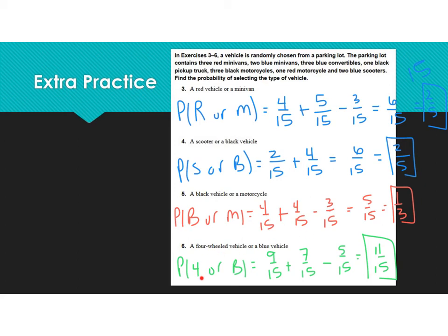For number 6, the probability of a vehicle with 4 wheels or a blue vehicle: I counted 9 vehicles with 4 wheels out of 15, and 7 vehicles are blue. I subtract the blue 4-wheeled vehicles — those minivans and convertibles — leaving 11 out of 15 chance of randomly selecting a 4-wheeled vehicle or a blue vehicle.